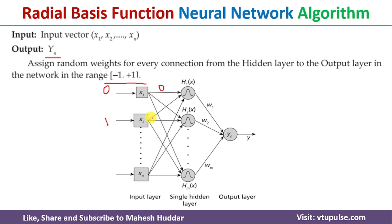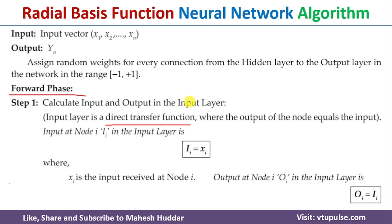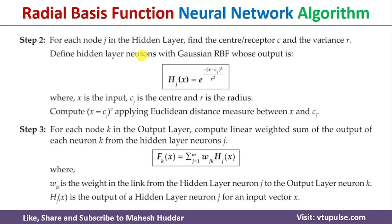Once you calculate the output of the input layer neuron, that output is given as input to the hidden layer neurons. At the hidden layer neurons, we use the radial basis function — either Gaussian or multi-quadratic — to convert non-linearly separable data into linearly separable data. At each hidden layer neuron we apply the Gaussian radial basis function and calculate the output: e raised to minus (x minus cj) squared divided by r squared, where x is the input, cj is the center of that hidden layer neuron, and r is the radius.